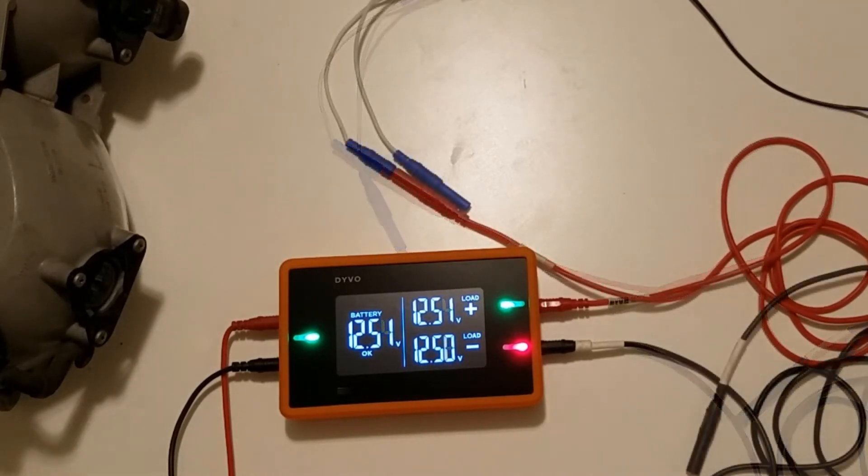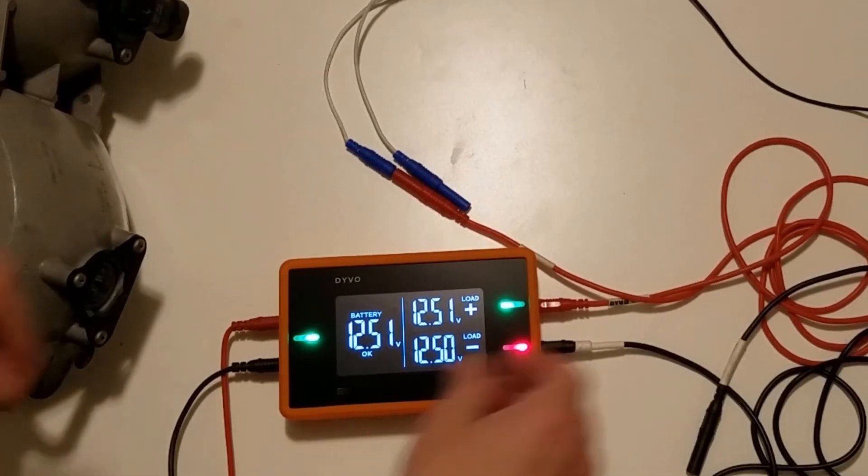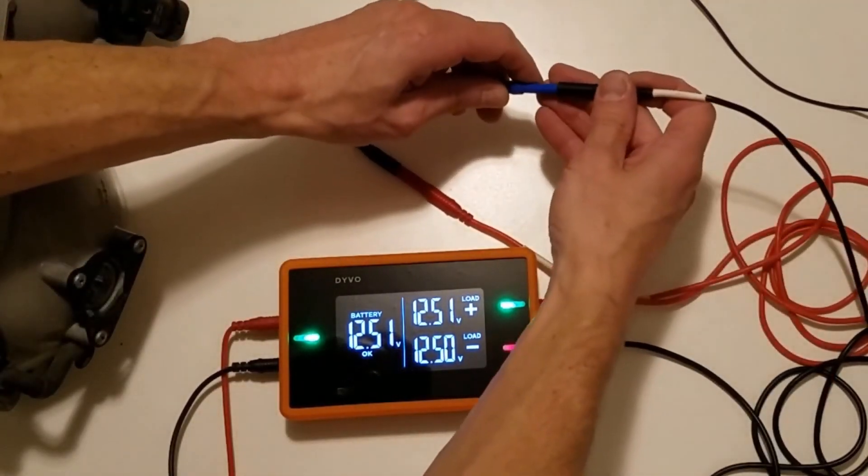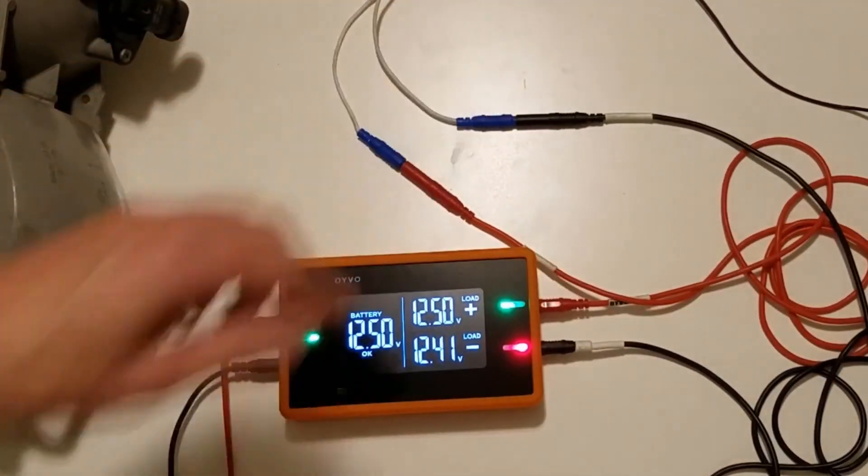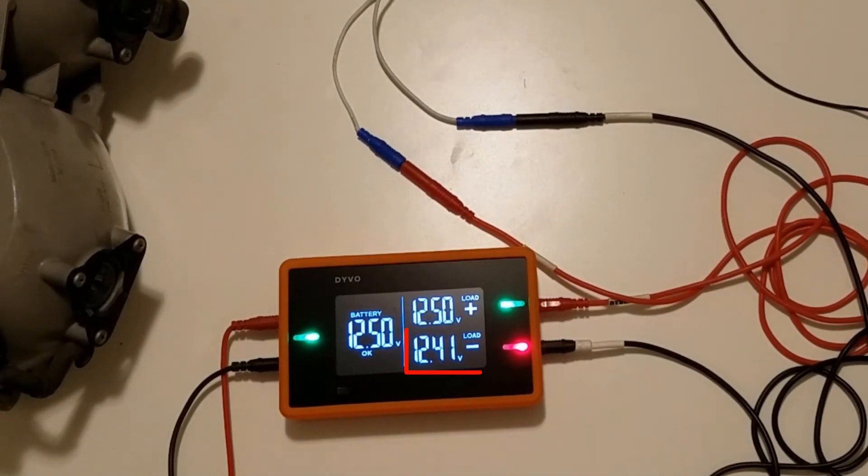Now I'm going to connect my negative test lead to the negative side of the circuit. Here I can see that the circuit negative LED remained red. That tells me that I have a really high voltage loss on the ground side of my circuit, and we have 12.41 volts on the ground side. Remember, our ground side should have very close to zero volts on it. Because we have 12.40 volts, that means that we don't have a good ground connection.